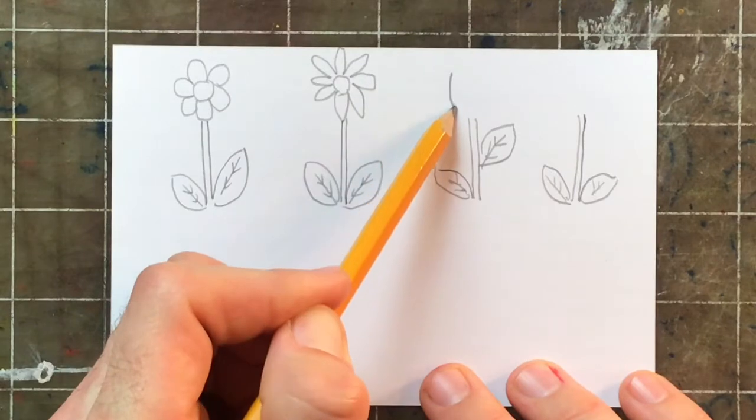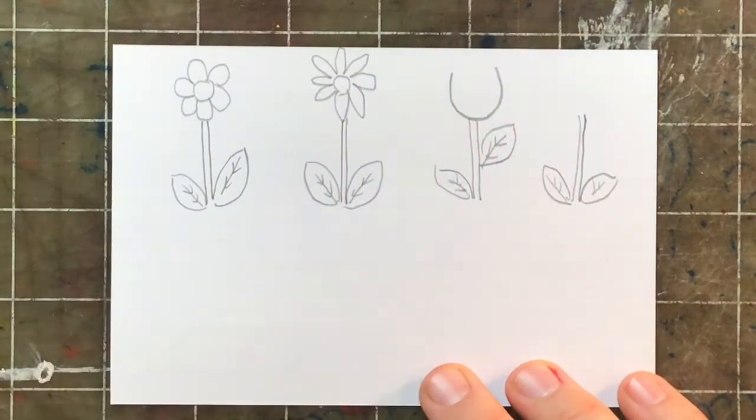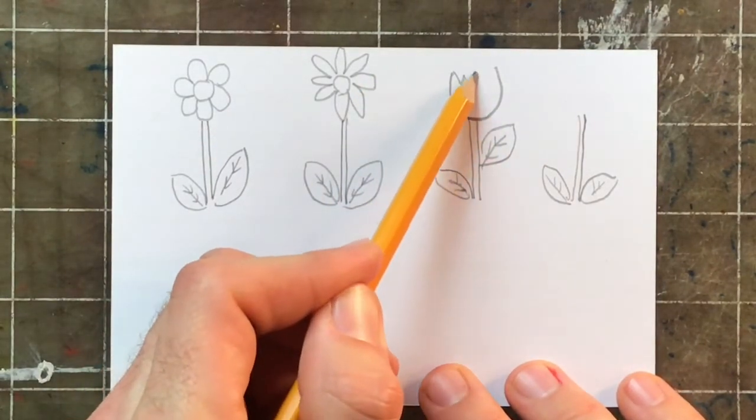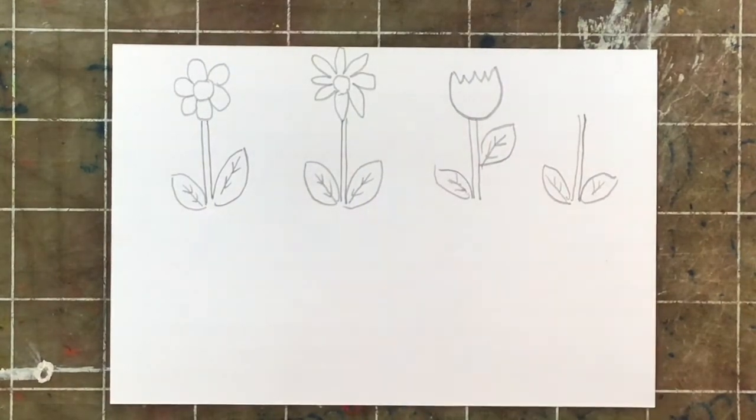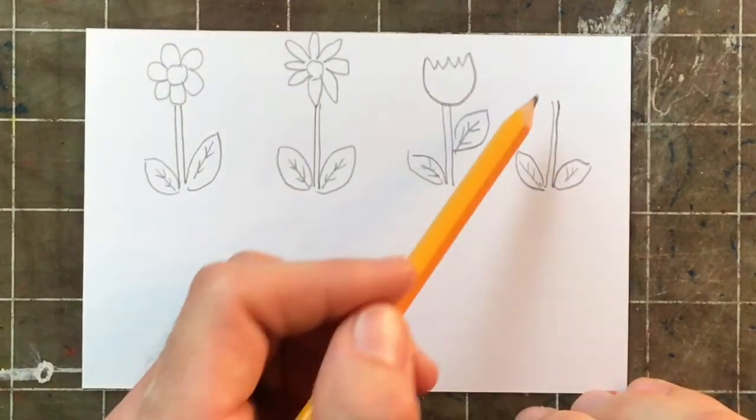Next one is going to be cup shaped. So, I'm going to use a big U shape. And then around the top, I make a zigzag line.